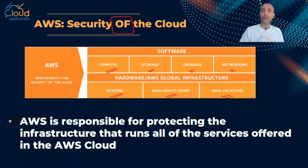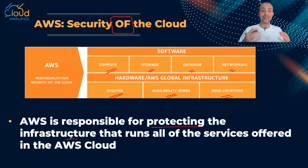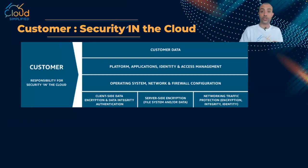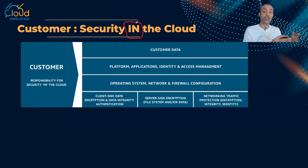AWS is responsible for protecting the infrastructure that runs all the services offered in the AWS cloud. In short, AWS is responsible for the security of the cloud - that's the key phrase. On the other side, customers are responsible for security inside the cloud, meaning customers are responsible to secure their data inside the cloud.